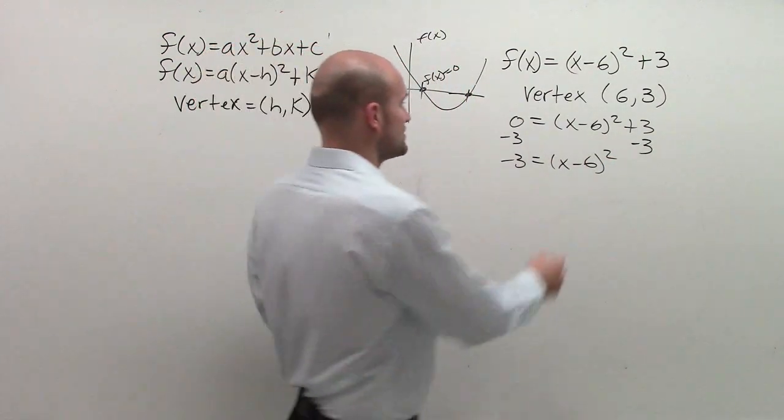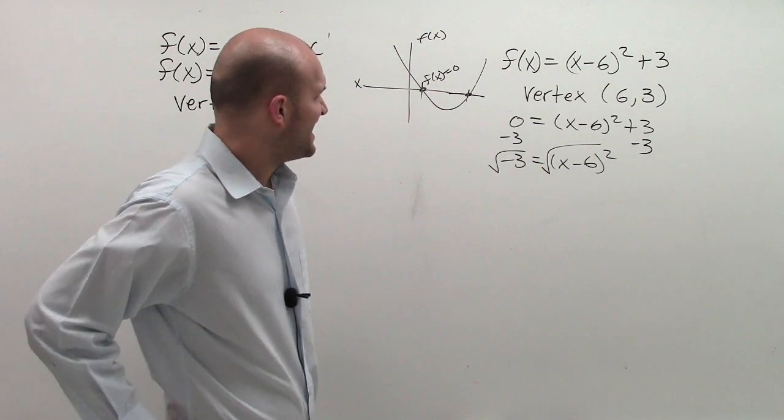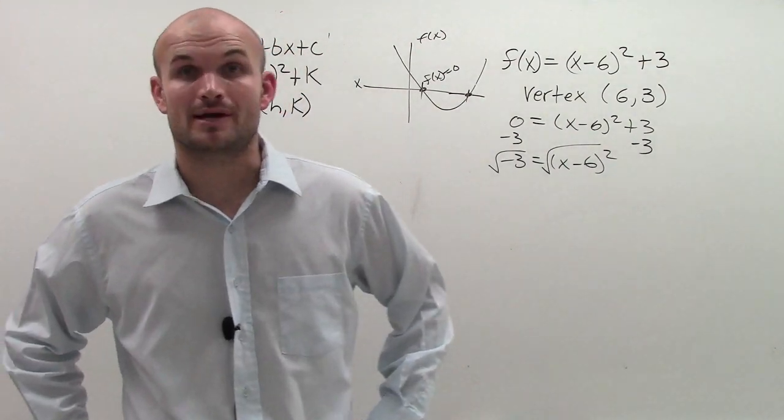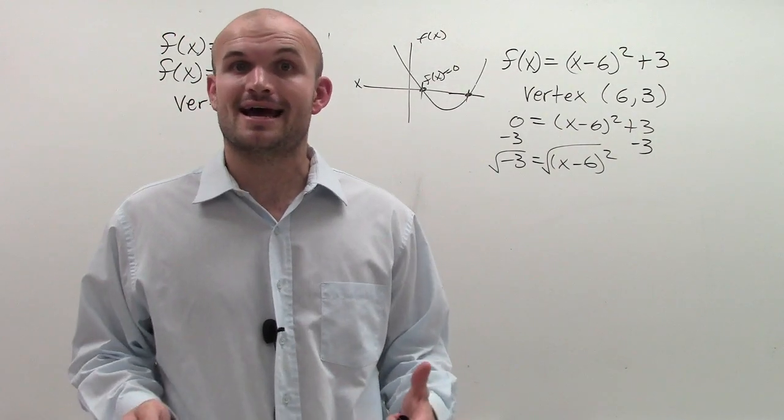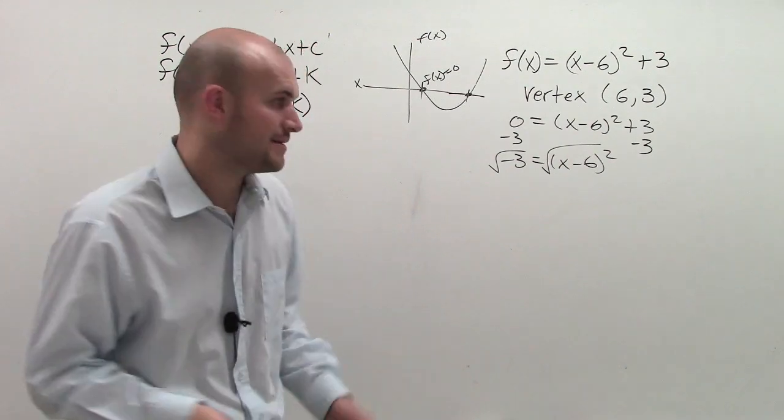Now I need to undo my square, so I'm going to root both sides. And then I look like I have a problem: I cannot take the square root of a negative number. There's not such a thing as a number that multiplies to give you a negative number.